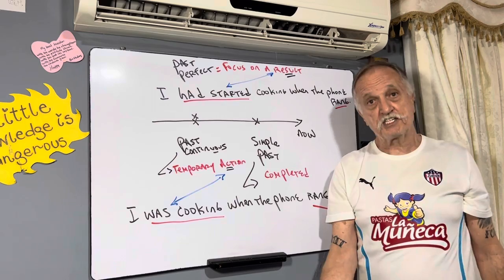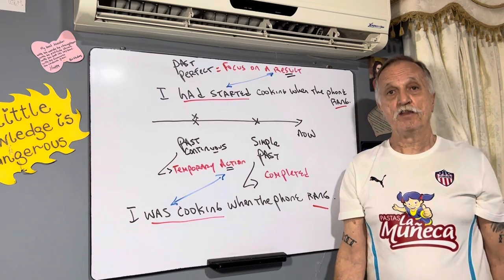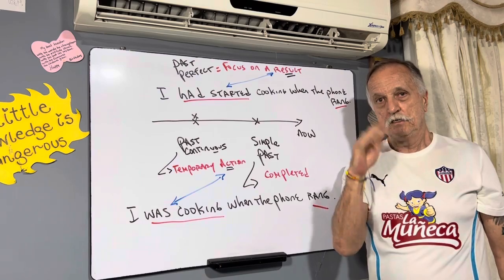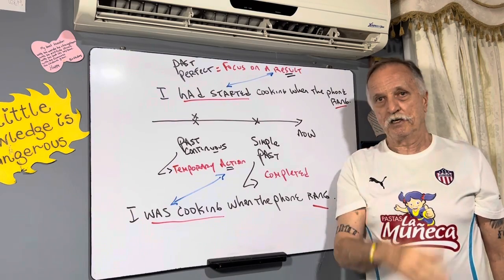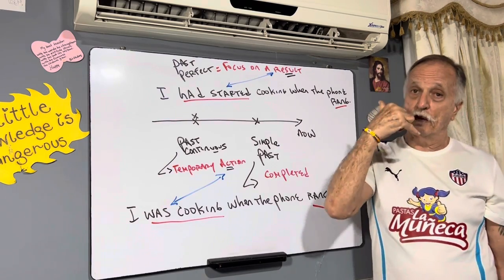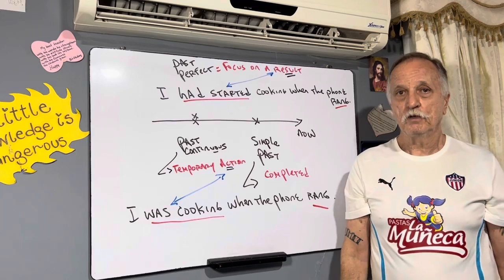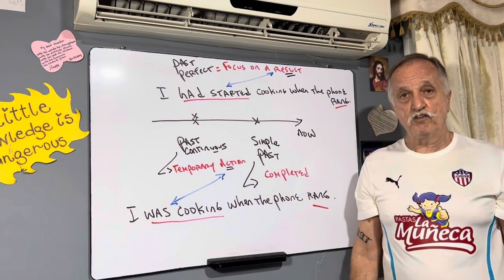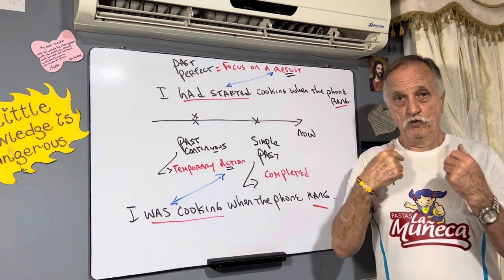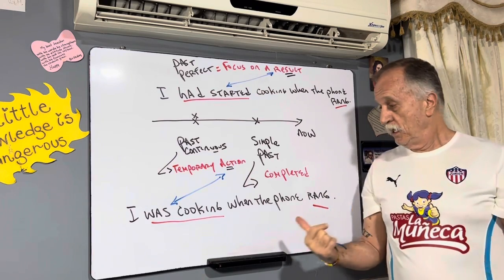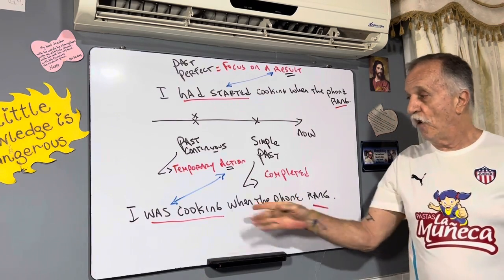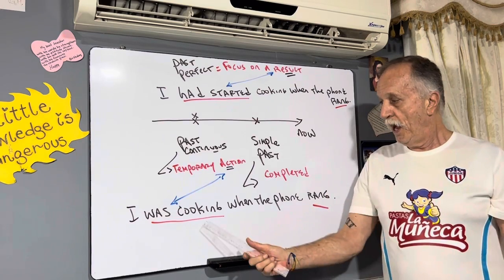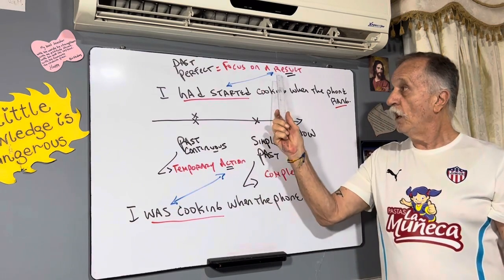You could say 'I had started cooking when the phone rang' — you're telling me that the cooking started, then the phone rang, no problem. If you tell me 'I was cooking when the phone rang,' you are telling me that the ringing of the phone interrupted the cooking. An action, a result.